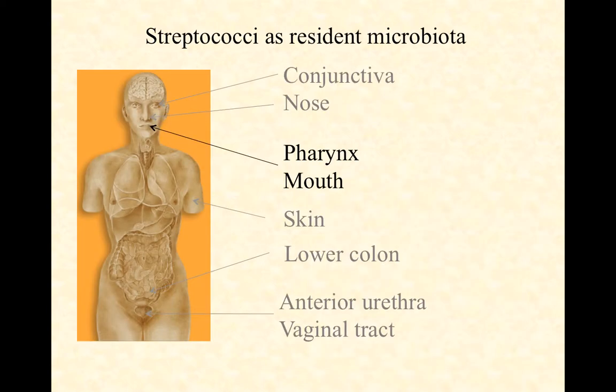The streptococci are part of our normal or resident microbiota. They live on us year-round, not just transiently — primarily in the pharynx and in the mouth, which is why I've got those in black on this image. In gray are other areas that streptococci can reside, though not nearly as commonly: the conjunctiva of the eyes, the nose, the skin, the lower intestinal tract, the anterior urethra, and the vaginal tract. But when you think streptococcus, the pharynx and mouth is where you should be thinking primarily.